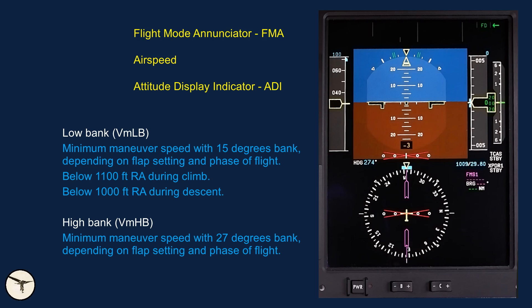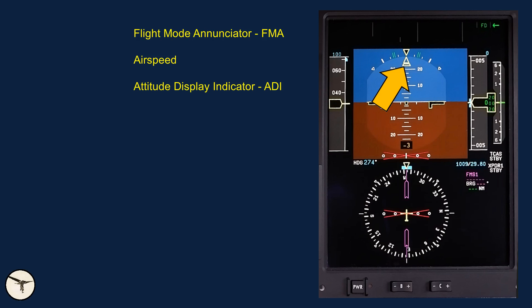Above 1100 feet, and at sufficient speed, the limit is 27 degrees, and this is high bank. When descending below 1000 feet, it changes back to low bank. This is the slip indicator — the lower part moves left and right when you are skidding. This is the radio altimeter. It is negative when the aircraft is on the ground, and it will show zero at touchdown during landing.